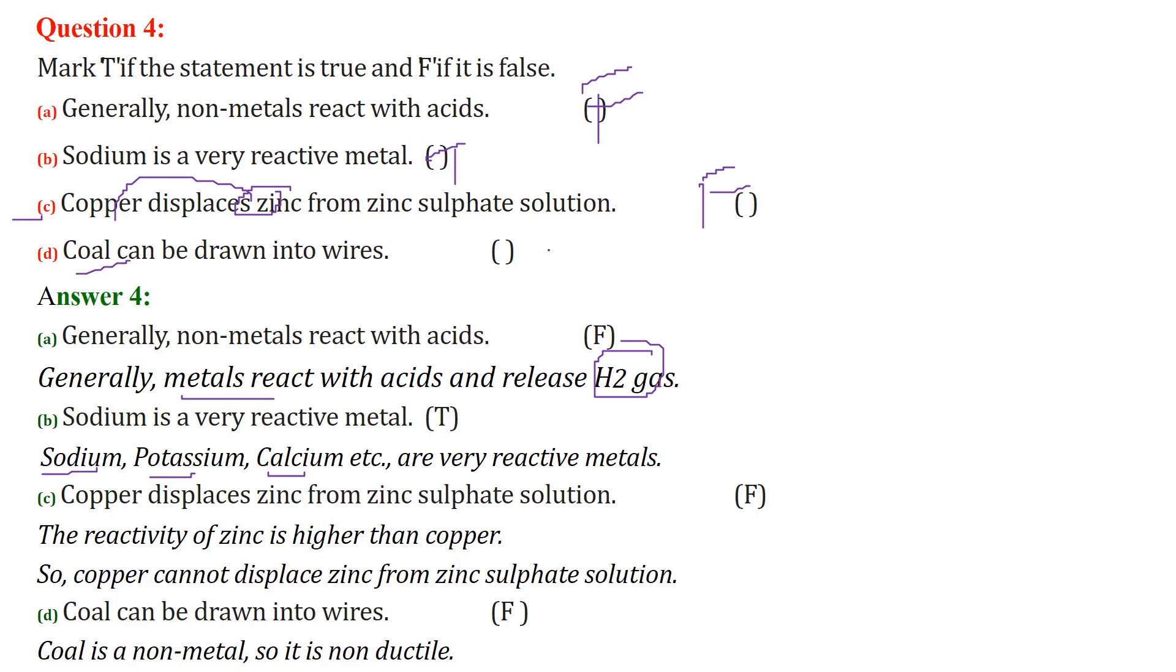Coal cannot be drawn into wire. This becomes false because coal is a non-metal. So it is non-ductile, therefore it cannot be drawn into wires.